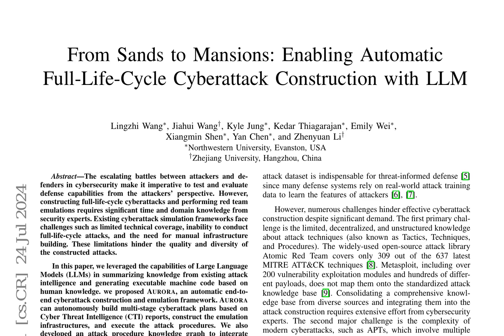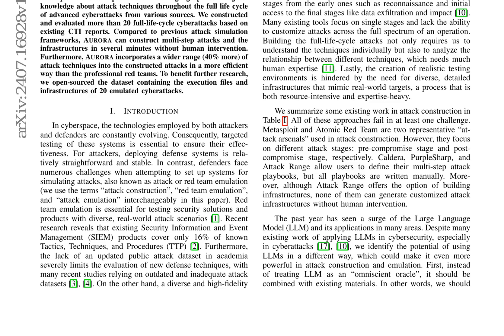To address these limitations, we propose AURORA, an automatic end-to-end cyberattack construction and emulation framework that leverages the capabilities of large language models (LLMs) in summarizing knowledge from existing attack intelligence and generating executable machine code based on human knowledge. AURORA can autonomously build multi-stage cyberattack plans based on cyber threat intelligence (CTI) reports, construct the emulation infrastructures, and execute the attack procedures.